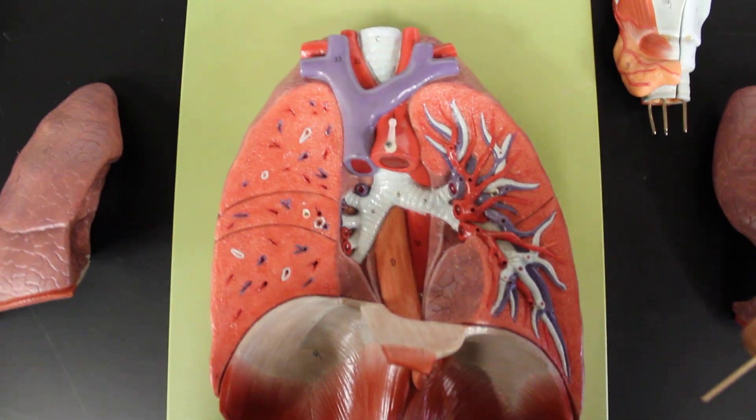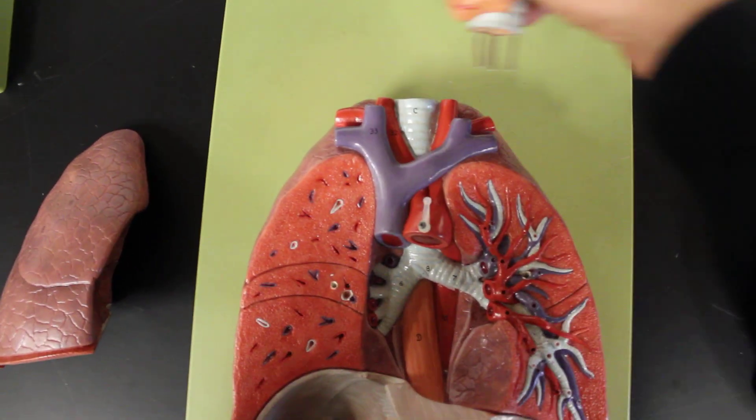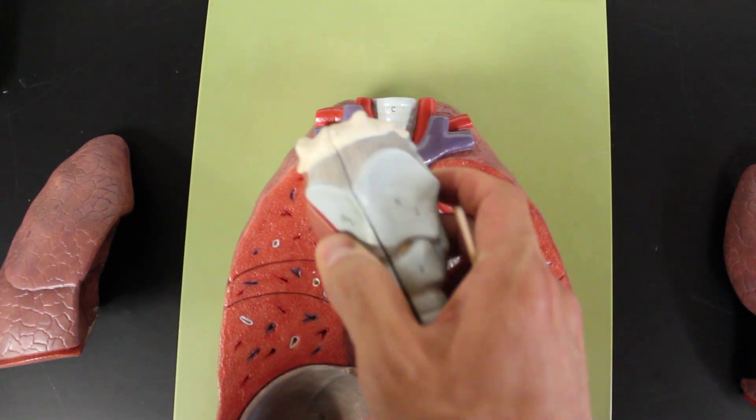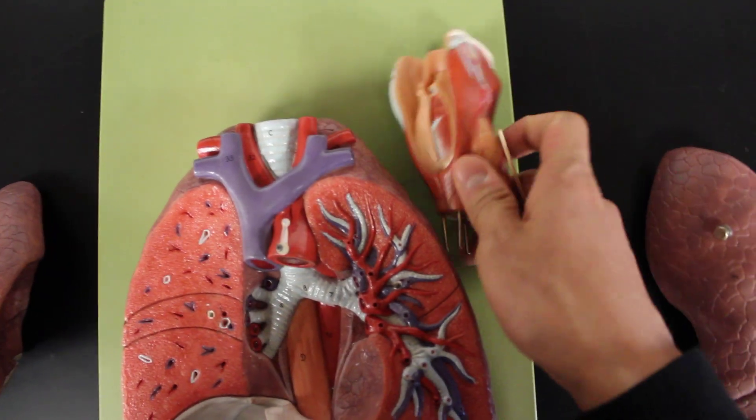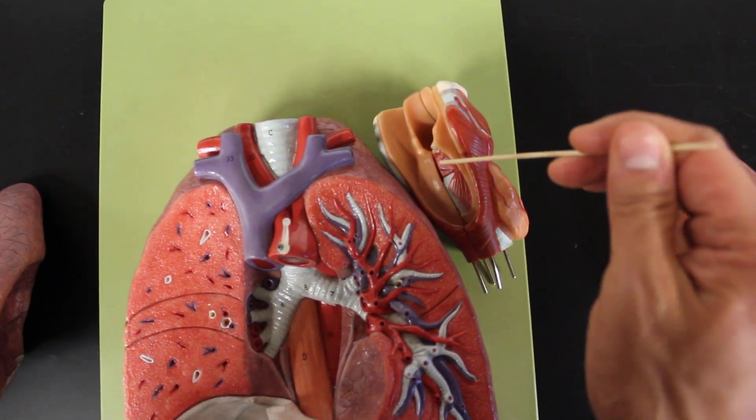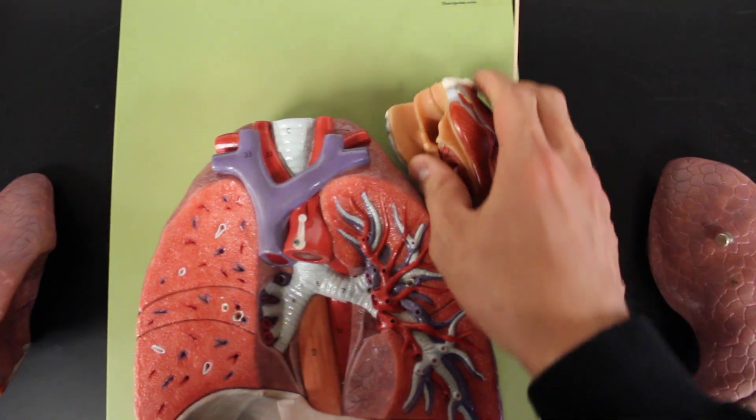And that's what this model has described as we can go through a quick overview. Again, we start with the larynx with the five different cartilages: thyroid, cricoid, arytenoid, corniculate, and the epiglottis.